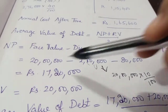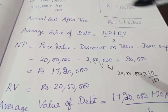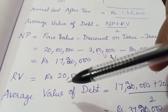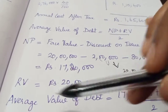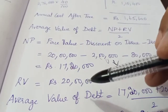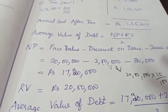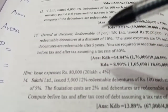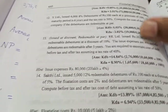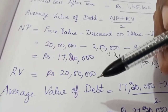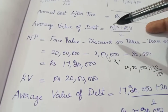Net proceeds amount is approximately 17,20,000. Next we calculate the redemption value. We need to be careful whether it is redemption at par or redemption at premium. This sum is redemption at par, so the redemption value is 20,00,000. The average value of debt is net proceeds plus redemption value divided by 2, giving 18,60,000.